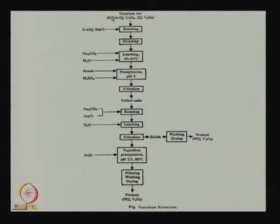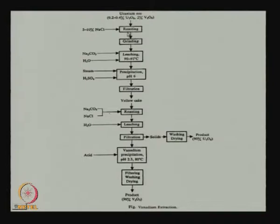Here is an example of a vanadium oxide flowsheet from a uranium ore containing 0.2 to 0.4 percent U₃O₈ and 2 percent V₂O₅. The idea here is not to make ferro-vanadium directly — we first try to produce pure Fe₂O₃ and pure V₂O₅. It has to go through many chemical steps. Eventually, by getting everything into solution and controlling pH, we can precipitate out uranium oxide and vanadium as an oxide separately.